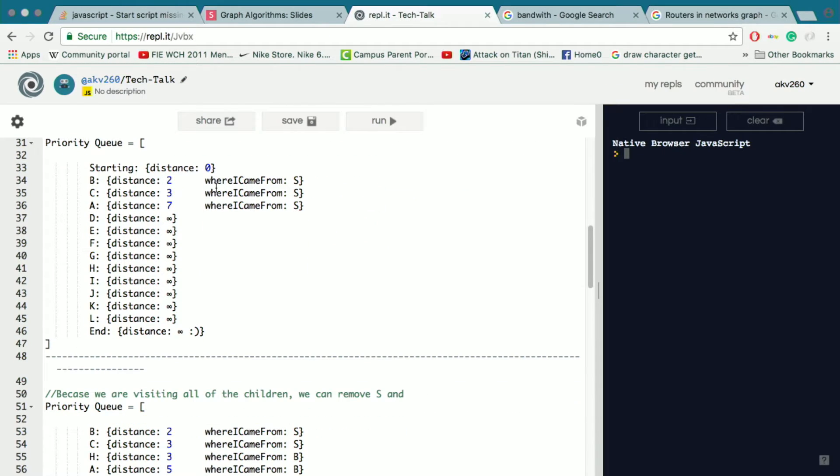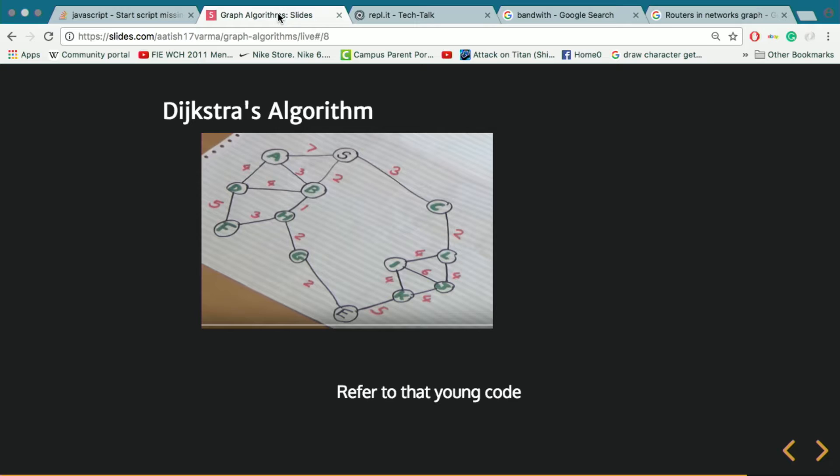So I can add that to a queue. So 2, 3, and 7. And I also need to add a property of where that node came from. So the direct parent of every node is listed here. So they all came from the starting point.